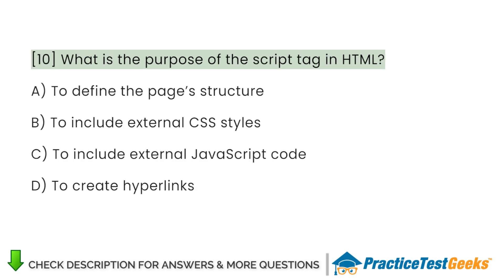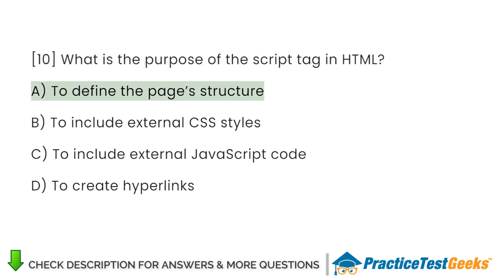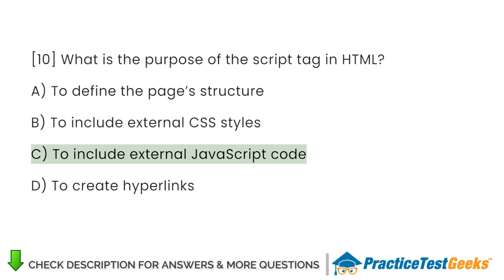What is the purpose of the script tag in HTML? A. To define the page's structure. B. To include external CSS styles. C. To include external JavaScript code. D. To create hyperlinks.